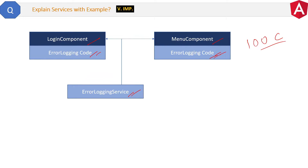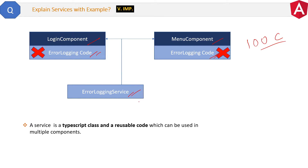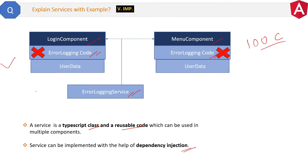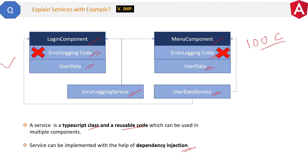We will put that common code inside this service file only, and then we will inject this service into both components. Finally, the duplicate error logging code in the components is no longer required. So the simplest answer is: a service is a TypeScript class with reusable code that can be used in multiple components. A service can be implemented with the help of dependency injection. In short, services are used for reusability. Additionally, if you have user data or any kind of shared data, you can create a centralized data service and remove direct data code from the components — that is the second benefit of services.